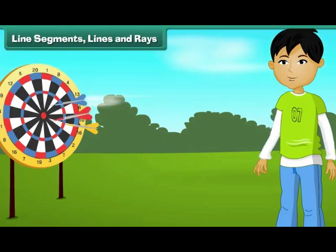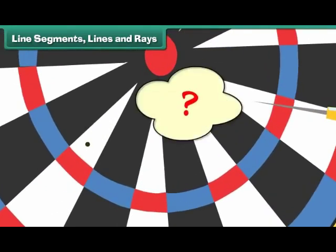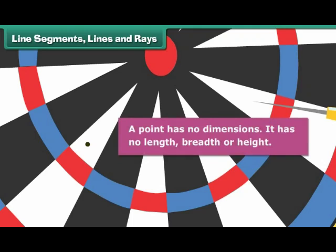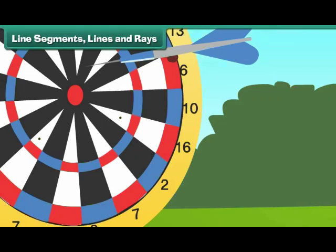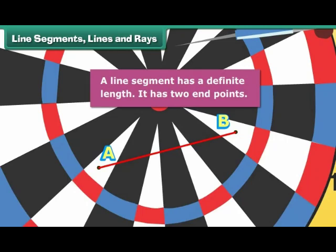Rahul perfects his aim by throwing darts at the dart board. Here is one such dart. Let us remove it. What do we observe? The dart has left a mark on the dart board. The mark is called a point. A point has no dimensions — it has no length, breadth or height. Let us remove another dart to reveal another point. We name the two points A and B. We now join the line segment.